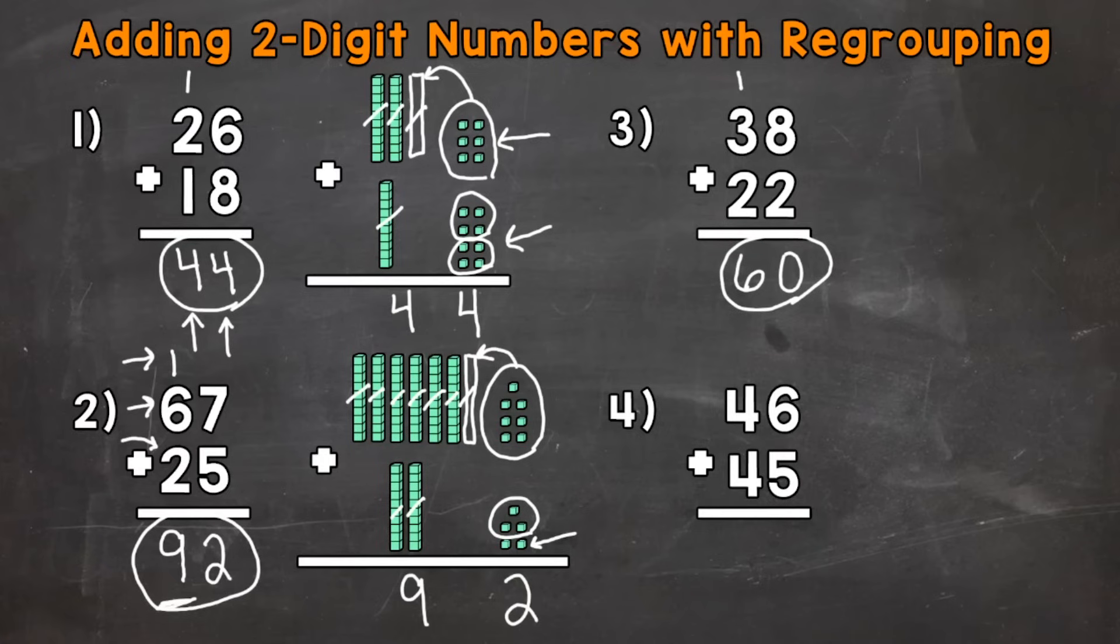Now, to recap there, as far as the tens place, 1 ten has a value of 10. 3 tens has a value of 30. And 2 tens has a value of 20. 10 plus 30 is 40. Plus 20 is 60. So that aligns with our answer. We have a 6 in the tens place that has a value of 60.